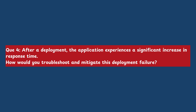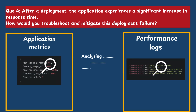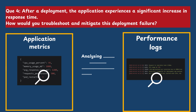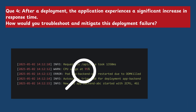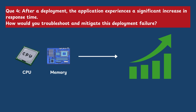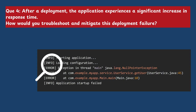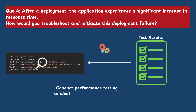Question 4: After deployment, the application experiences a significant increase in response time. How would you troubleshoot and mitigate this? I would start by analyzing application metrics and performance logs to identify any bottlenecks or spikes in resource utilization. If the issue is related to infrastructure, I would scale up the necessary resources such as CPU or memory in the Kubernetes cluster. Additionally, I would review recent code changes and conduct performance testing to identify any optimizations or regressions.